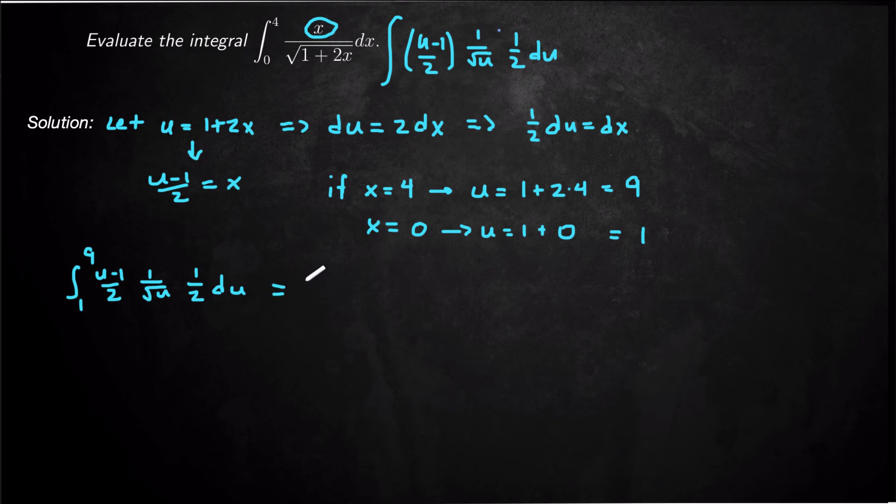I'm going to factor out the 1 halves and make it 1 fourth out front, integral from 1 to 9. And then I'm going to rewrite it as u minus 1 times u to the negative 1 half du. So distribute that. So we get 1 over 4 integral from 1 to 9. That's going to be u to the 1 half minus u to the negative 1 half du.